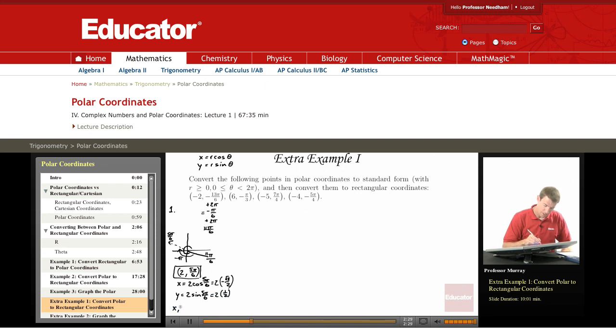So my x, y, collectively, the rectangular coordinates, are negative √3 and 1. Negative √3 and 1. So that's the first point.